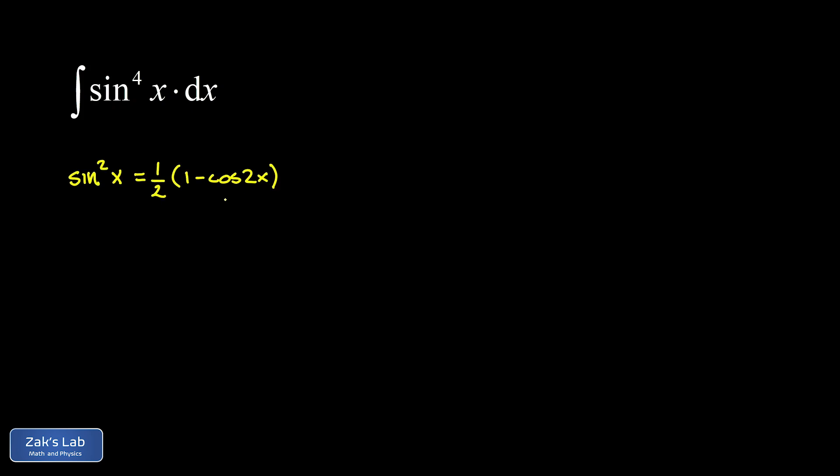Just a quick reminder of these: we have sine squared x is equal to one half times the quantity one minus cosine of 2x, and cosine squared x is one half times the quantity one plus cosine of 2x.